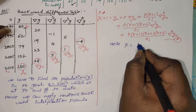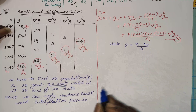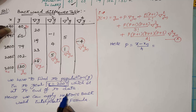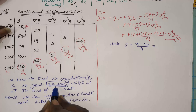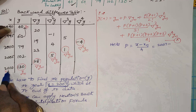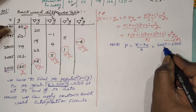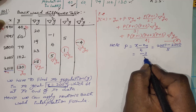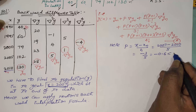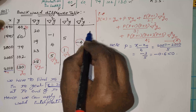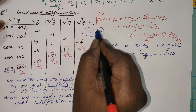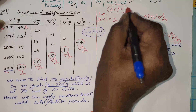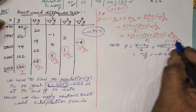In Newton's backward interpolation formula, p is nothing but (x − xₙ)/h. Don't forget it. So x is 2007 since we have to find the population at that year; xₙ is the last x value which is 2010; h is 5. So p = (2007 − 2010)/5 = −3/5 = −0.6. One important thing: in Newton's backward interpolation formula, p should lie between −1 and 0. In Newton's forward formula, p should lie between 0 and 1.